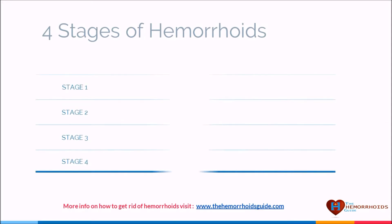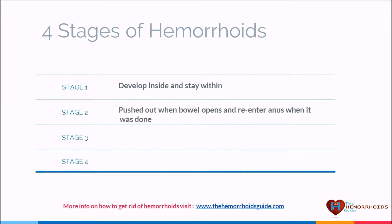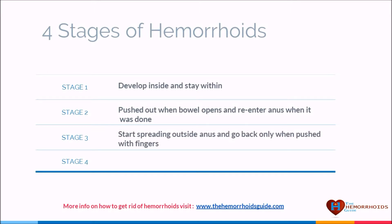Hemorrhoids fall into four stages. Stage one: they develop inside and stay within — these are known as internal hemorrhoids. Stage two: they are pushed out of the bowel opening when passing stool but re-enter the anus on their own. Stage three: they start spreading outside and go back only when pushed with fingers or external pressure is applied. Stage four: they permanently remain outside the rectum area — these are known as external hemorrhoids and can be very painful and agonizing.